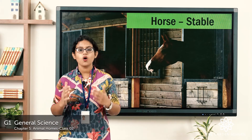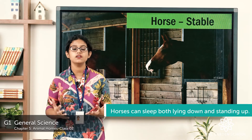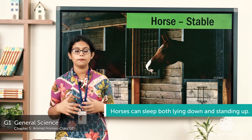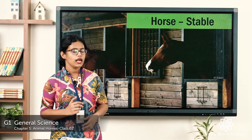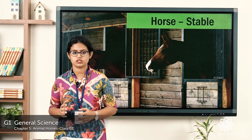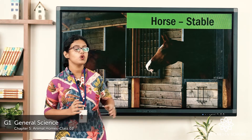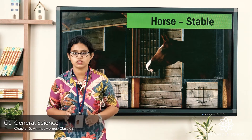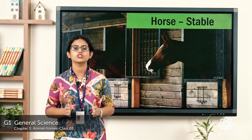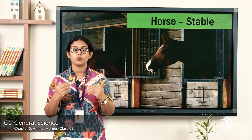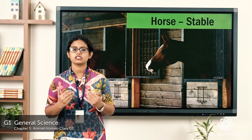Coming to the next one — horse. Where does this horse live? They live in the stable. The building where they live is called a stable. And you can clearly see the pictures — in the stable, it is divided into separate stalls where each horse stays. So, a horse lives in the stable.